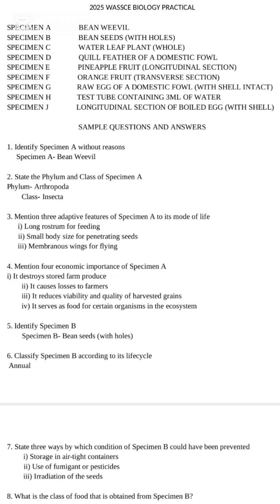Sample questions and answers. Number 1: Identify specimen A — it is a bean weevil. Number 2: State the phylum and class of specimen A — phylum Arthropoda, class Insecta. Number 3: State three adaptive features of specimen A to its mode of life — they have a long rostrum for feeding, small body size for penetrating seeds, and membranous wings for flying. Number 4: State four economic importances of specimen A — it destroys stored farm produce, causes losses to farmers, reduces viability and quality of harvested grains, and serves as food for certain organisms in the ecosystem.